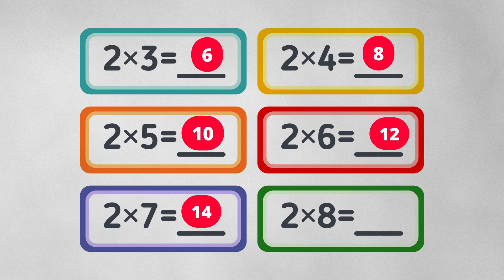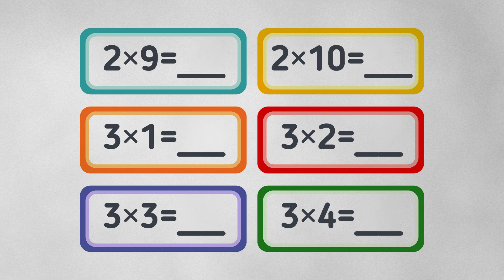2 times 7 equals 14. 2 times 8 equals 16. 2 times 9 equals 18. 2 times 10 equals 20. 3 times 1 equals 3.